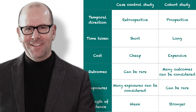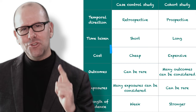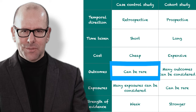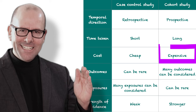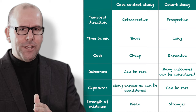Quick summary: Case control studies are retrospective, which means they are quick and cheap to do. Starting with the outcome of interest, you can look at rare outcomes and look back at multiple exposures — though the evidence is not terribly strong. Cohort studies, by contrast, are prospective, which means they take a long time and are expensive. Starting with the exposure, you can look at rare exposures and multiple possible outcomes over time, and the evidence they provide is considered stronger.